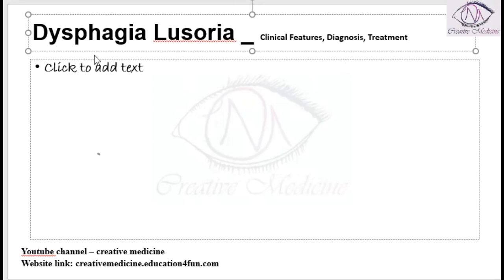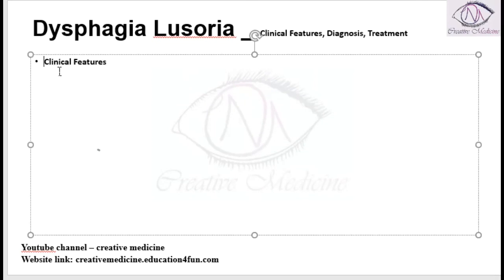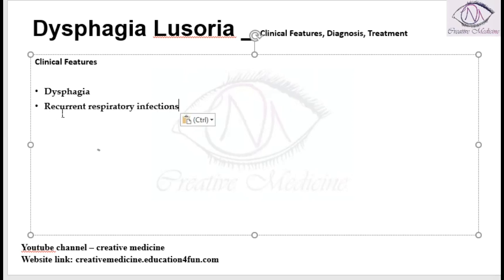Clinical features of dysphagia lusoria. In dysphagia lusoria, because of the vascular anomaly, it starts causing compression of the esophagus, resulting in dysphagia in the patient. Sometimes, recurrent respiratory infections can also occur, and difficulty in breathing can also occur due to the vascular anomalies.